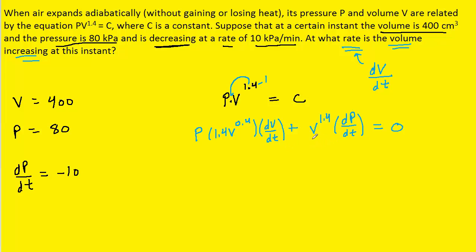So maybe we could subtract this term first over to the right-hand side. And then to isolate dV/dt, what we can do is divide both sides of the equation by the term P times this 1.4 V to the 0.4. And we'll have to do it on both sides, of course. And when we do that, that term will cancel out on the left-hand side.